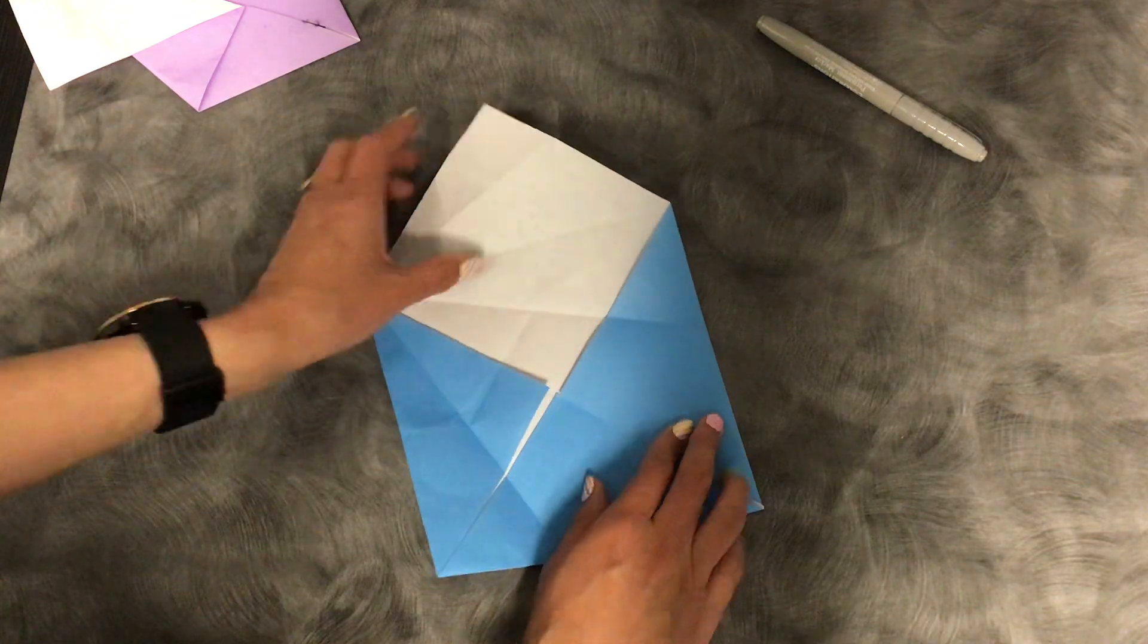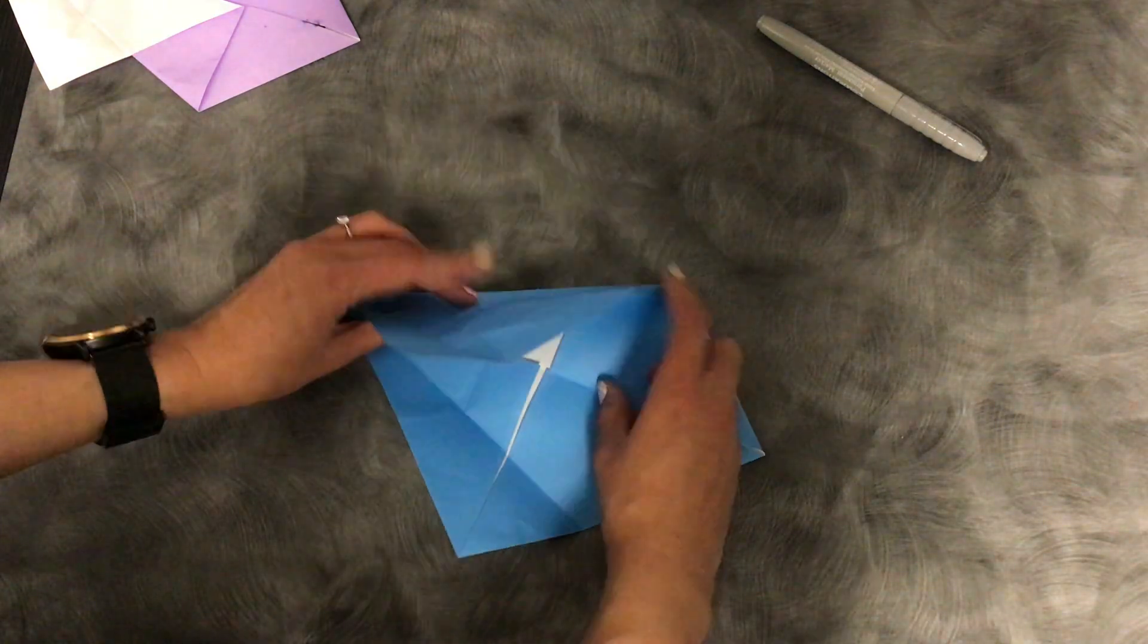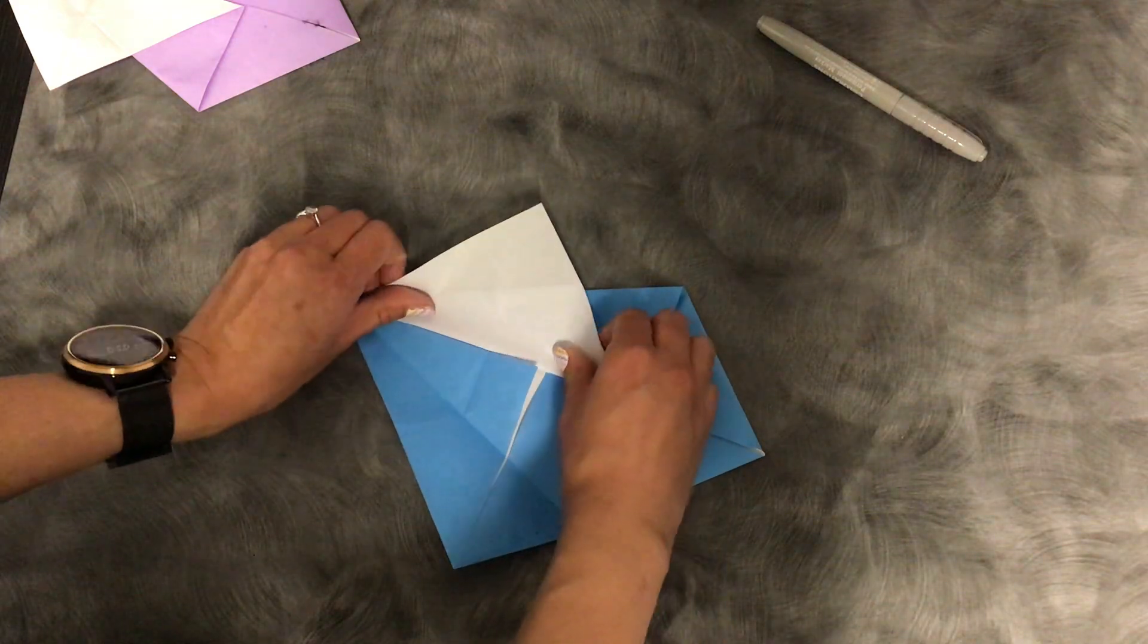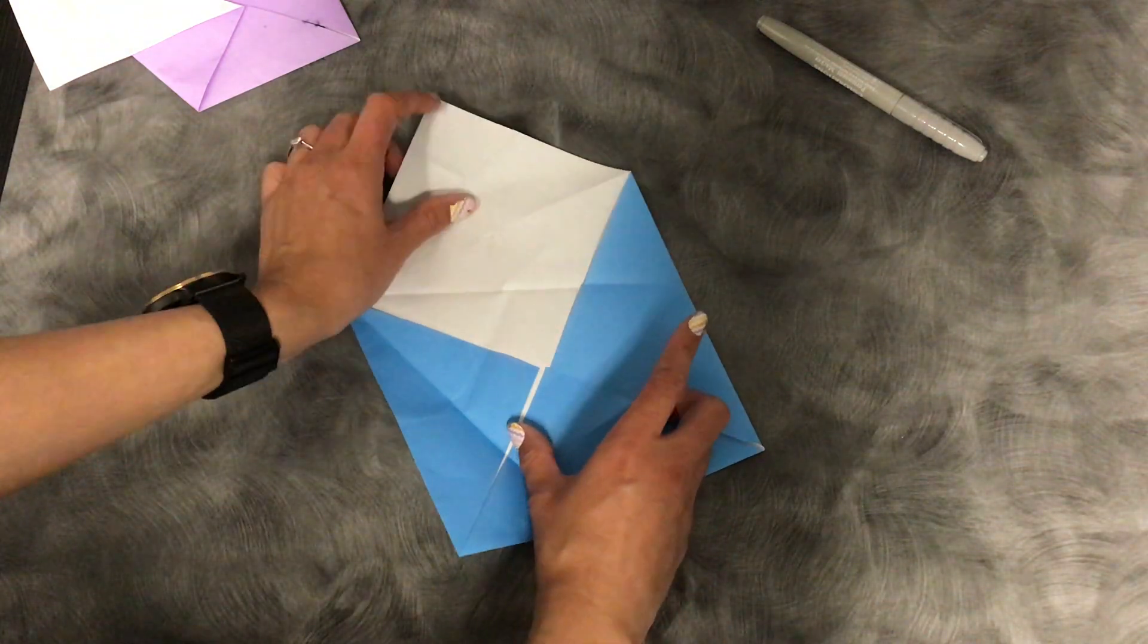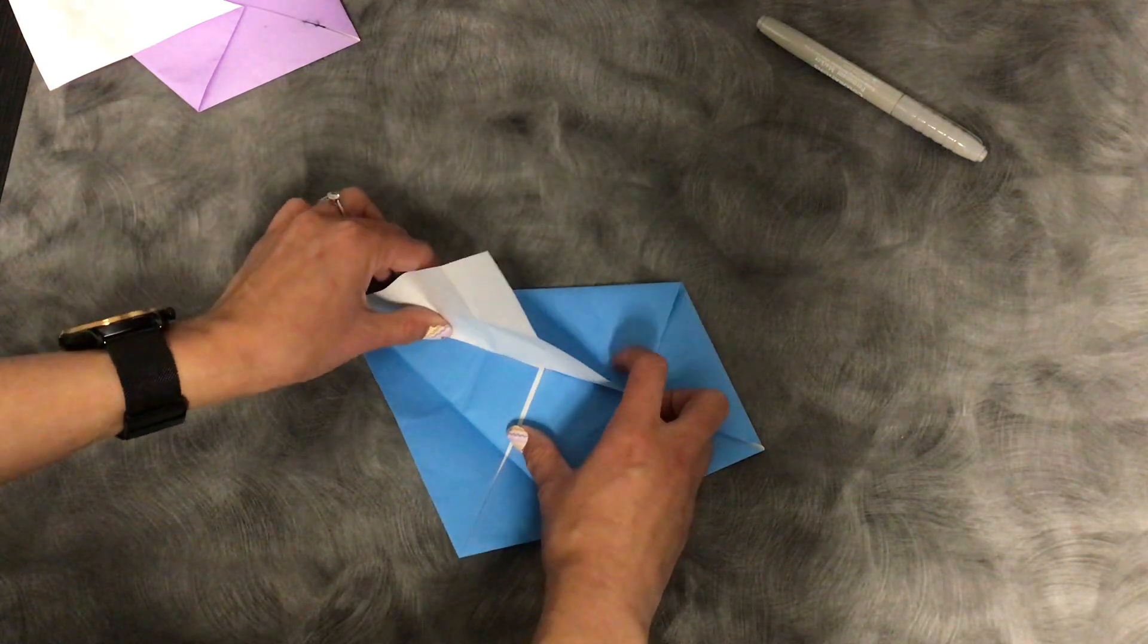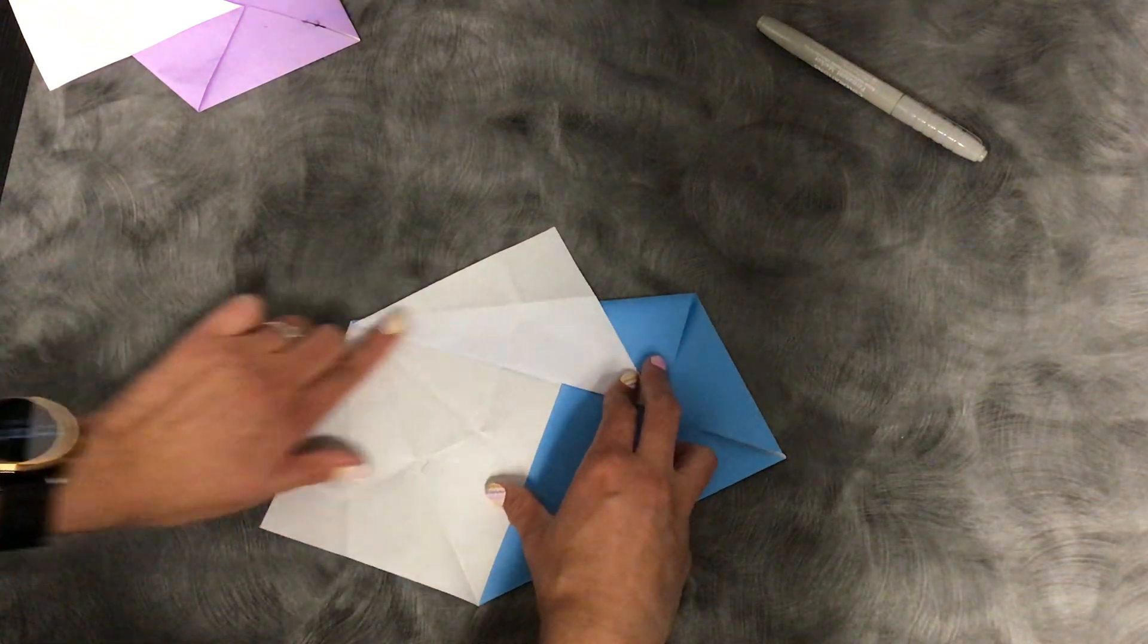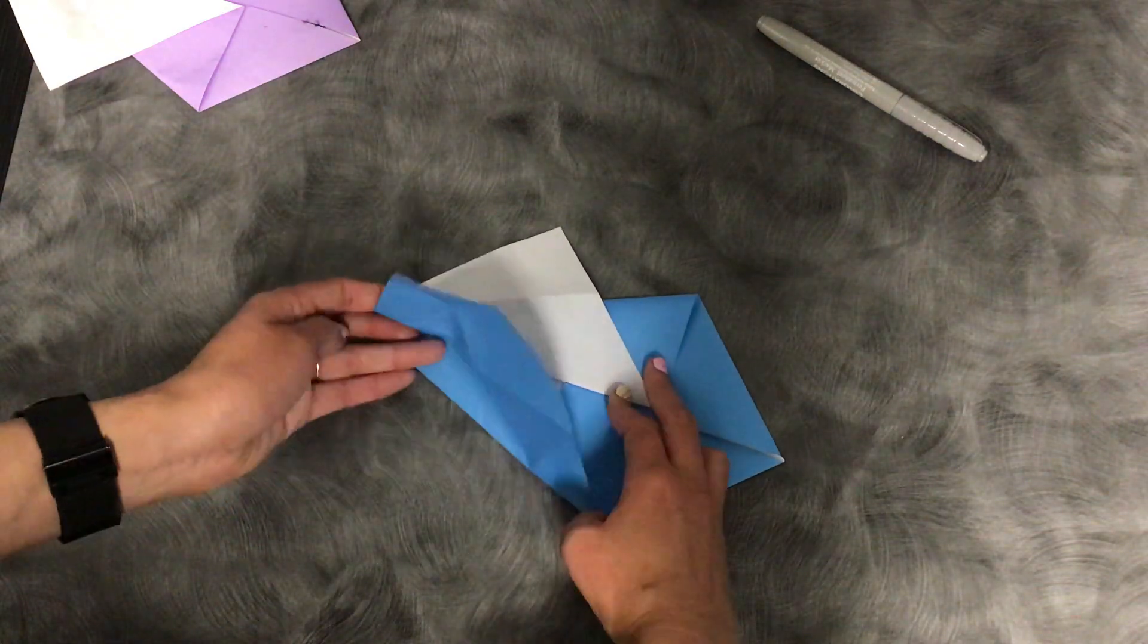So fold it upwards and then line up this edge that you just made with the inside and then fold it up. So if you need, I'll do that again. So you have a square here then fold it towards the middle and flat. Do the same thing on the bottom. So square and then fold that towards the middle.